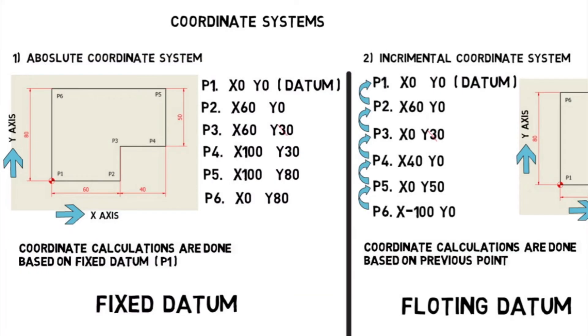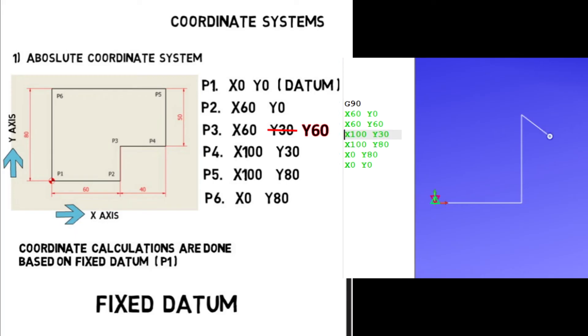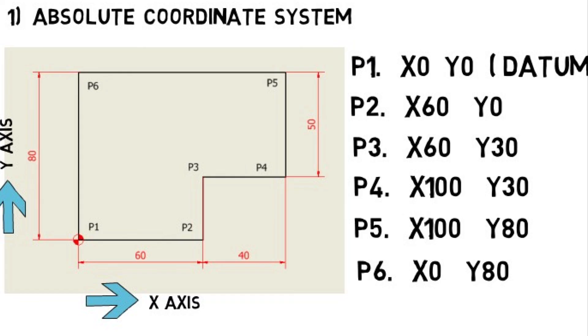we recommend to use absolute coordinate system. The reason is, when we make a error in the both, absolute will result the mistake only where we went wrong. But in incremental, we can see mistake is continued to all next points because of floating datum.